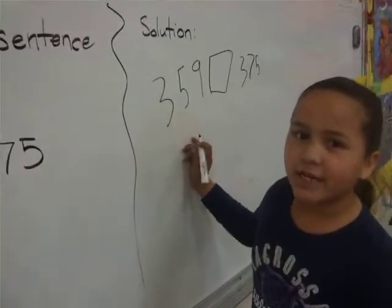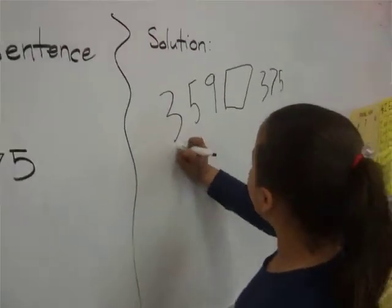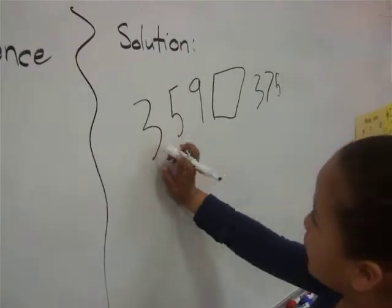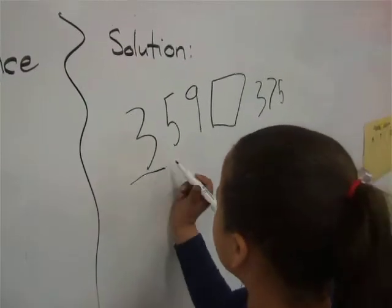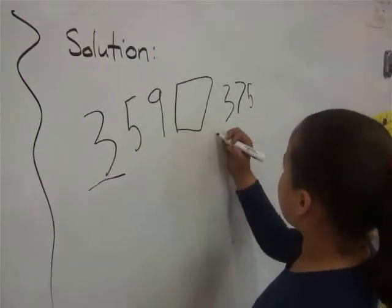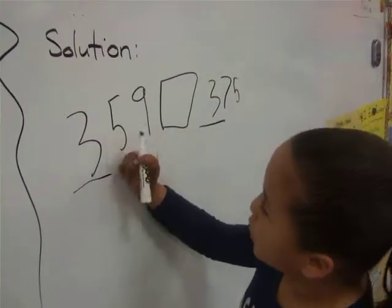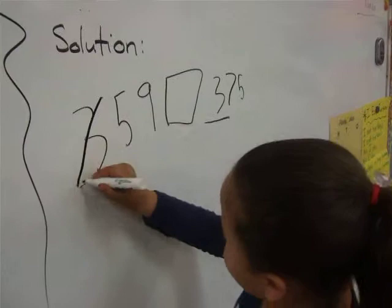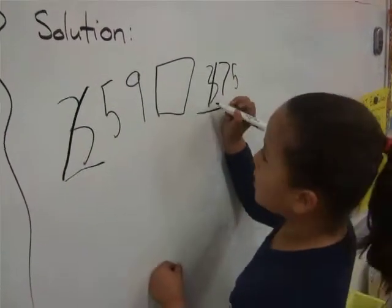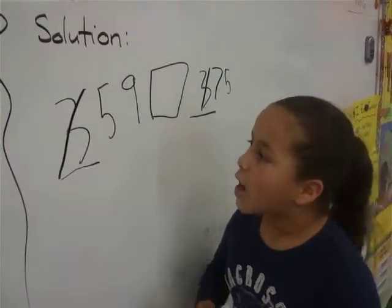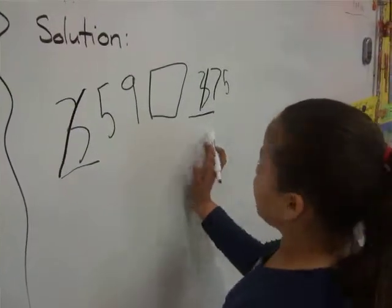First we look at the hundreds. So this is three, that's my hundred, and this is my hundred. So now we can cross the threes. Why are you crossing the three hundreds? Because they're the same numbers.